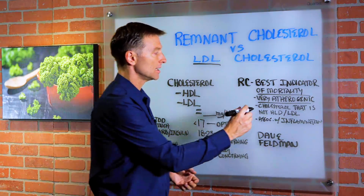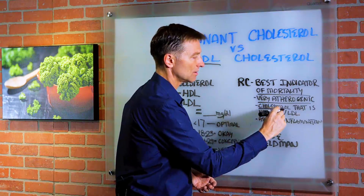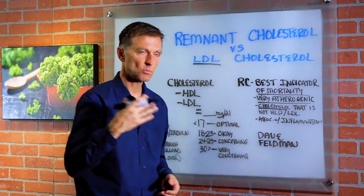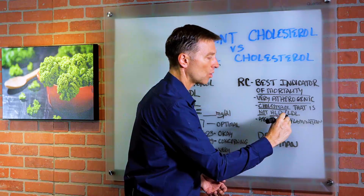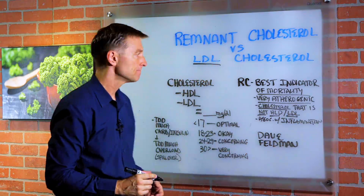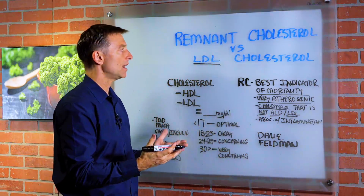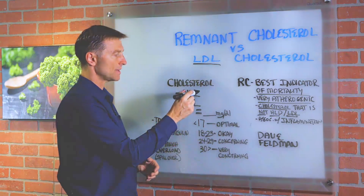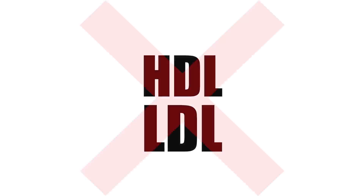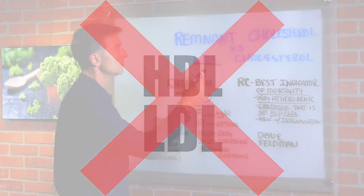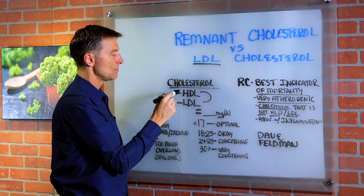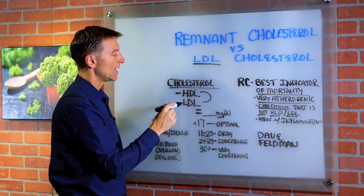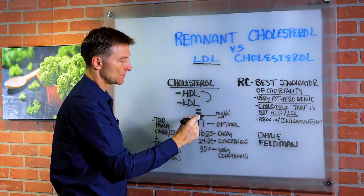What remnant cholesterol is, is basically the plasma cholesterol — the cholesterol in your blood that is not HDL or LDL. You may have thought that total cholesterol is just basically the combination of HDL and LDL, but actually it is not. The way you find remnant cholesterol is you take your total cholesterol, minus your HDL and your LDL, and you get this figure.